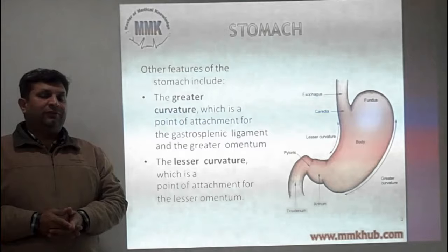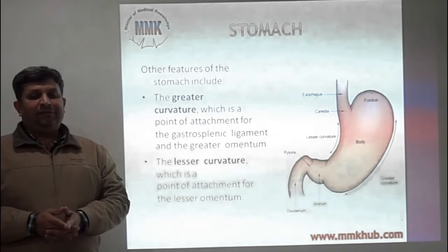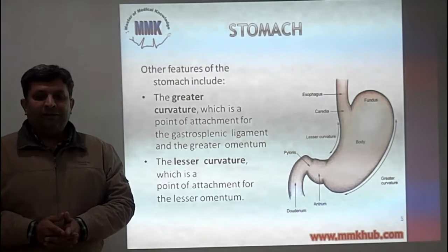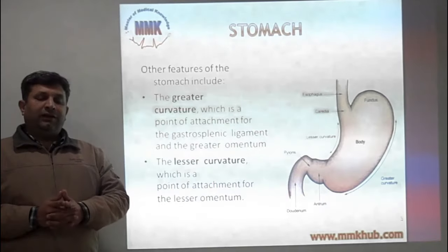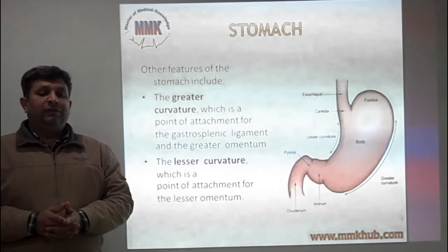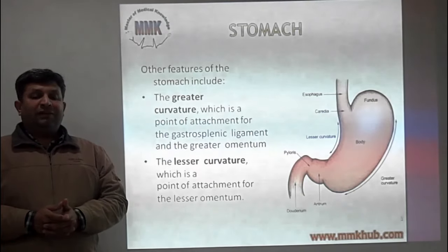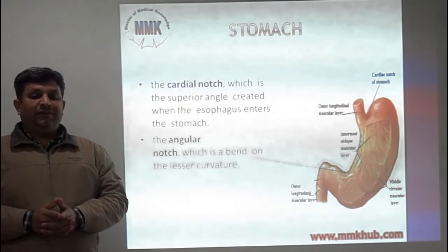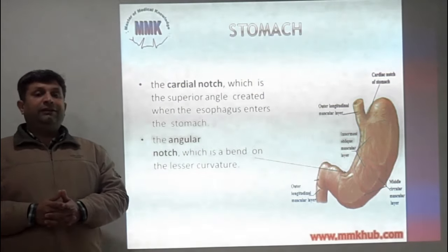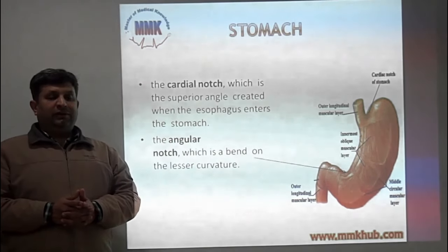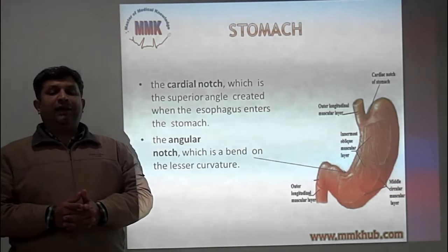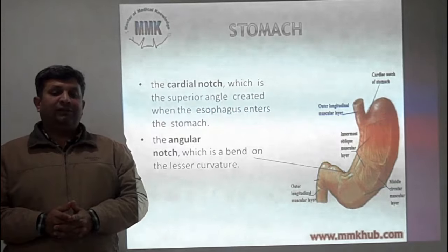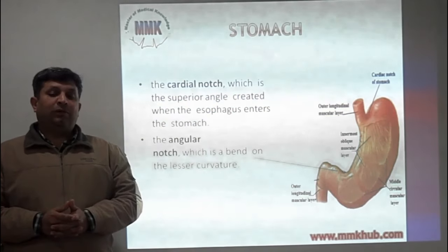Stomach has two curvatures. On the lateral side there is the greater curvature, which is the point of attachment for the gastrosplenic ligament and the greater omentum. On the medial side there is the lesser curvature, which is the point of attachment for the gastrohepatic ligament. The cardiac notch is the superior angle created when the esophagus enters the stomach, and the angular notch, also called the incisura angularis, is the bend of the lesser curvature before the start of the pyloric channel.